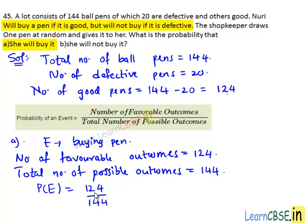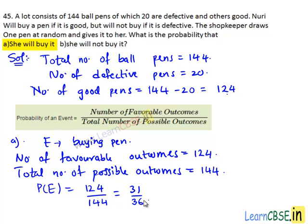Here 4 is a common factor of both numerator and denominator. 4 goes into 124 thirty-one times and 4 goes into 144 thirty-six times. Therefore, the probability that Nuri will buy the pen is 31 divided by 36.